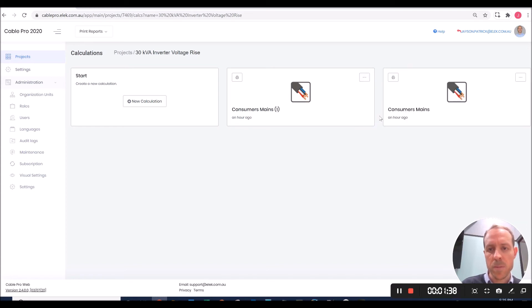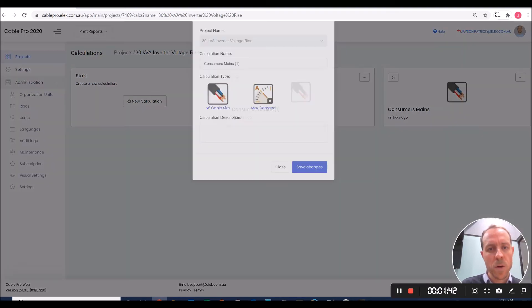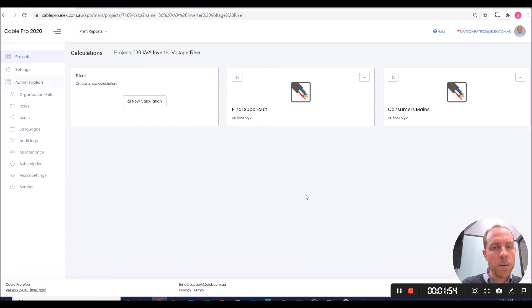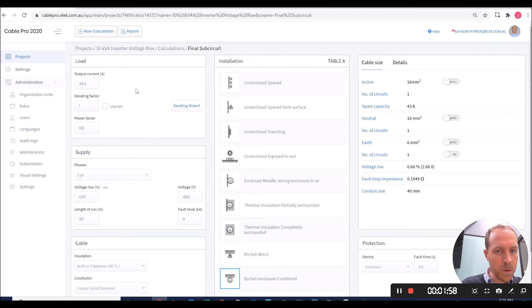I will copy this consumer's mains calculation. I will rename it as final sub-circuit. I'll open this cable calculation. All the inputs should be the same. All we need to do is change the length of run to 60 meters, and the permissible voltage rise to 1.33. Installation is the same. Again, over here we have a minimum cable size of 16 square millimeters and over 60 meters. The actual voltage rise is 1.33%, which meets our requirement.